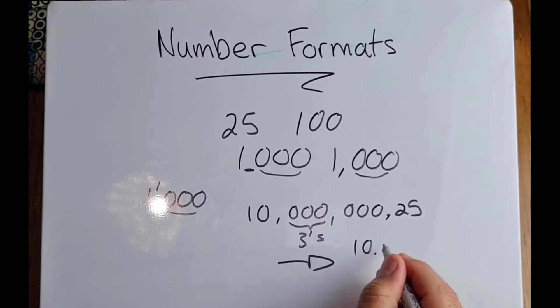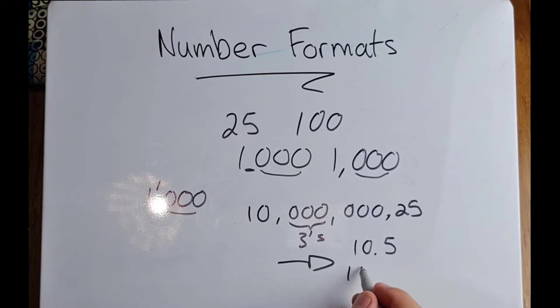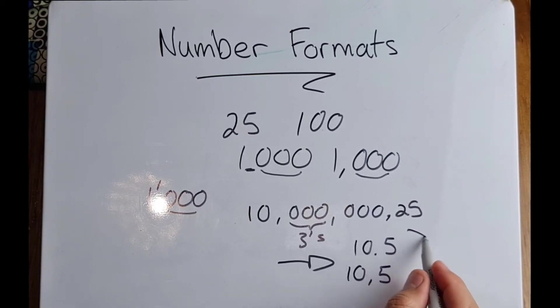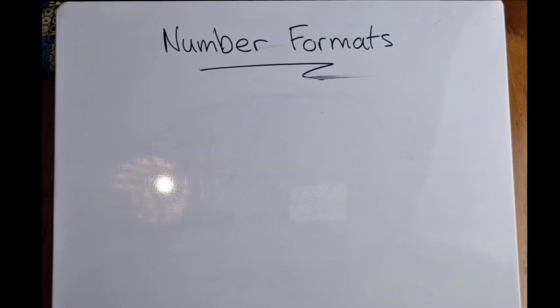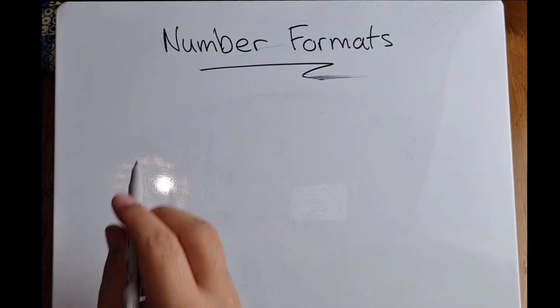For example, if I've got 10.5 and I've got 10 comma 5, it's still exactly the same. The same value of a number can be written in different ways.